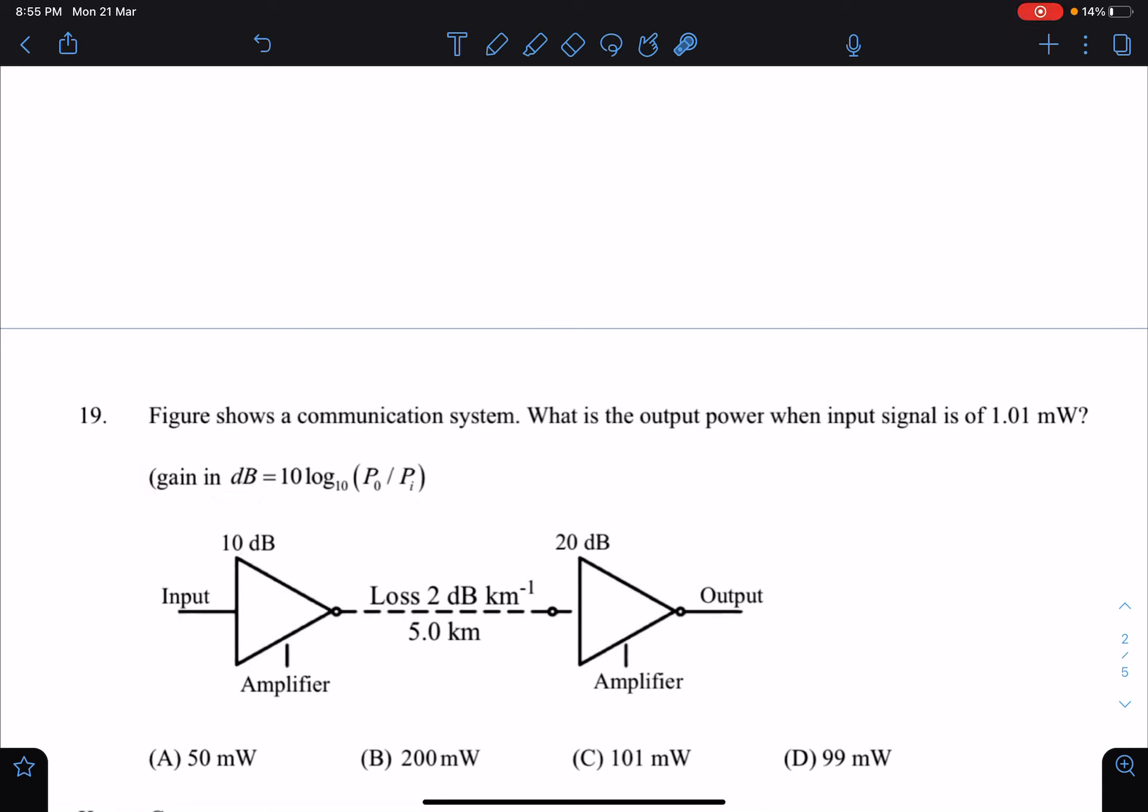log base 10 (P₀/Pᵢ). So we have to calculate the output power. We have to figure out how much is the gain and then we can calculate the output power. You can see there is this amplifier, and if any input signal of intensity I or power P is given...